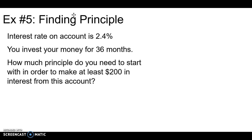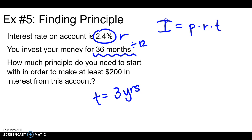Finding principle. So start with your formula. I know this is just repetitive. Lots of different variables we can solve for here. Interest rate on your account is 2.4%. There's your rate. You invest your money for 36 months. I wanted to show you this one because if they give you months, you have to turn it into years. So how do I turn months into years? Well, since there's 12 months in every year, if I divide this by 12, I can see that this is really just three years. So that's my time. And how much principle do you have to start with in order to make $200 in interest?